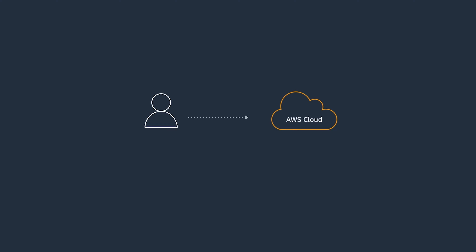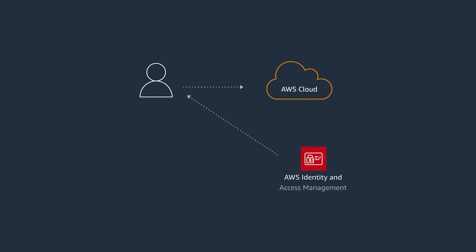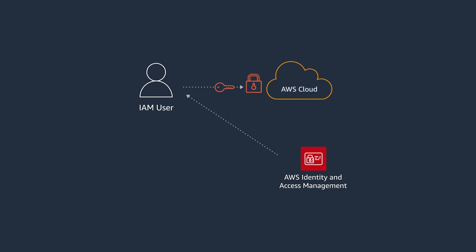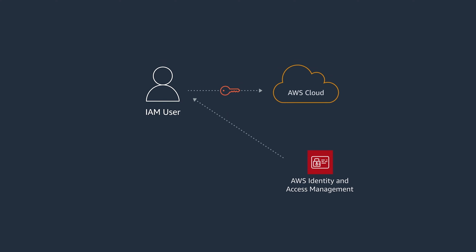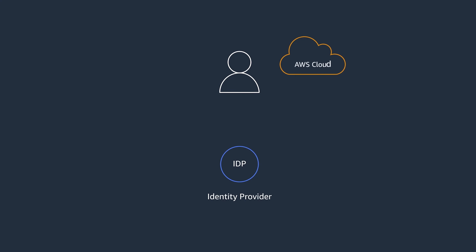Let's say we want to give AWS access to our colleagues. I can create an AWS IAM user with long-term credentials, but this isn't always great, because creating another set of credentials adds complexity to that user, and that in turn makes it harder to secure. The best thing we can do is delegating authentication to a centralized identity provider. This is also called federation. This way, we can manage all of our colleagues' identities in one place.